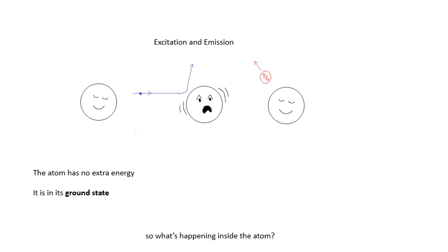Let's talk about excitation and emission. The first atom on the left is in its ground state — it has minimum energy, no extra energy. We bash it with something, it becomes excited; we've given it extra energy. It's like a wobbly jelly, and it doesn't like being like that. It wants to get rid of that energy, so it chucks out a photon. So we have excitation — going from the ground state up to a higher energy level — and then we lose this energy by emitting a photon, a packet of electromagnetic radiation. That's emission.